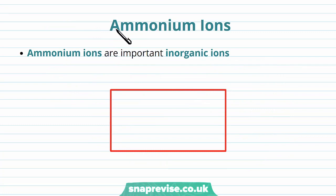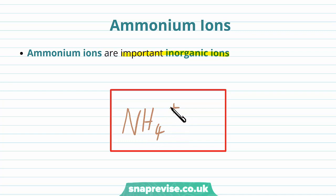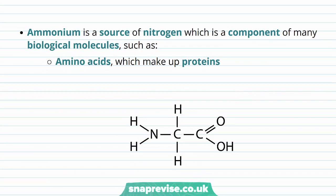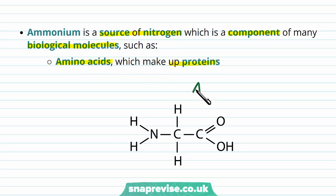Ammonium is perhaps one of the less well-known inorganic ions, but it's still very important in several organisms. Ammonium has the formula NH4+, so it's a nitrogen with 4 hydrogens, and overall it has a positive charge, making it a cation. The important reason that we use ammonium is that it's a source of nitrogen atoms. Nitrogen is a component of many biological molecules, including amino acids, which we use to make up proteins. Amino acids all follow the same basic structure, and importantly they must have nitrogen present, which comes from ammonium.